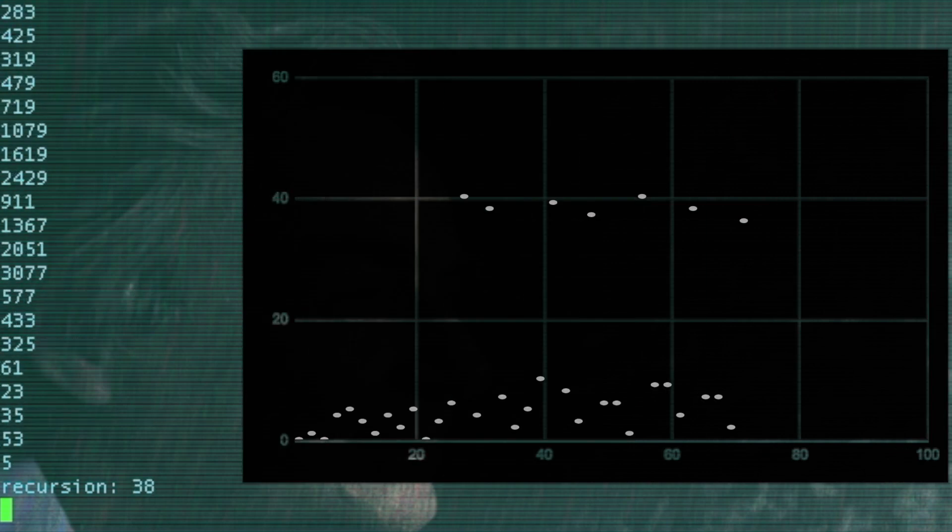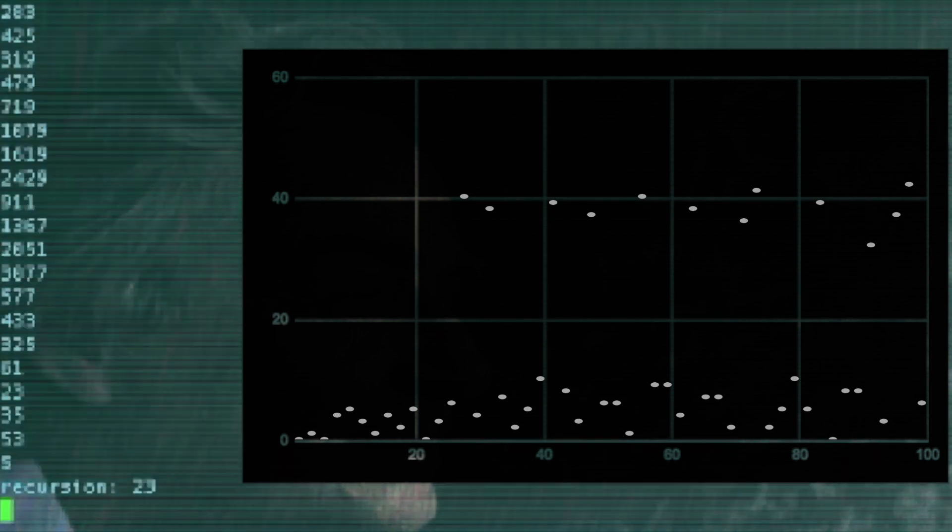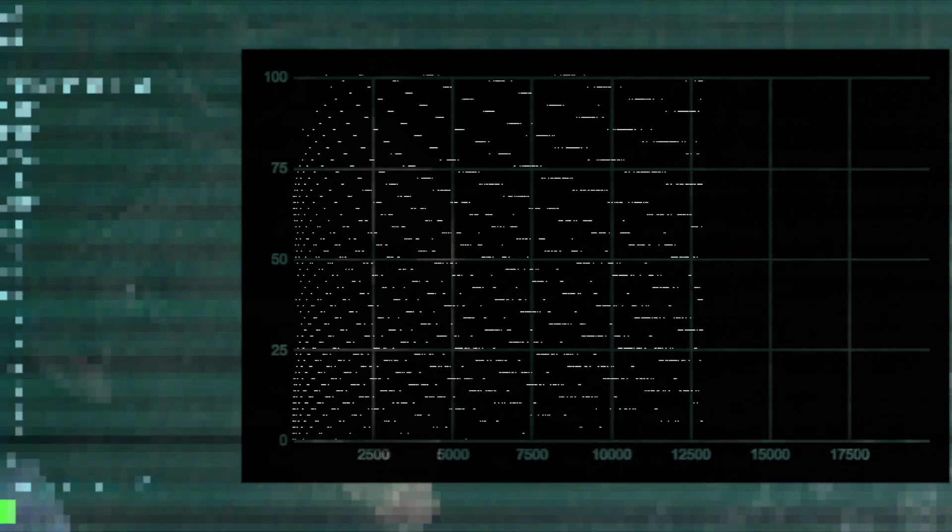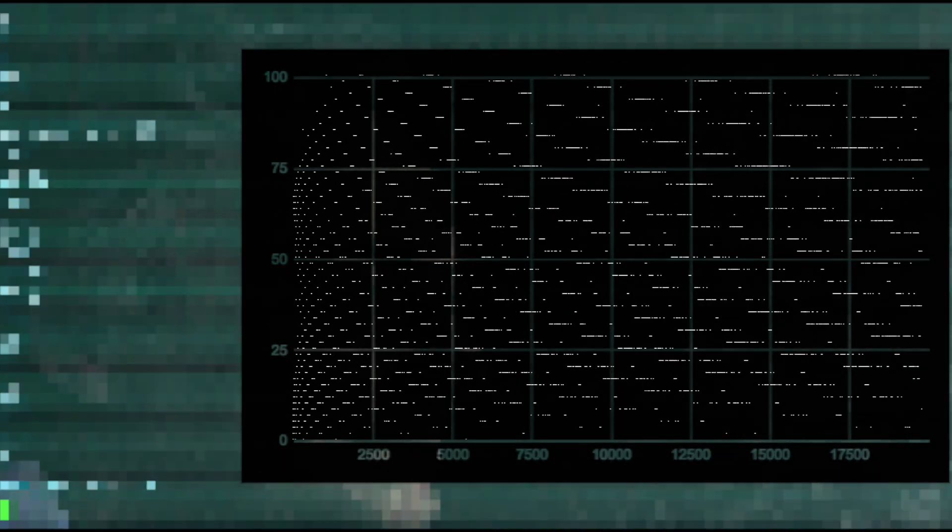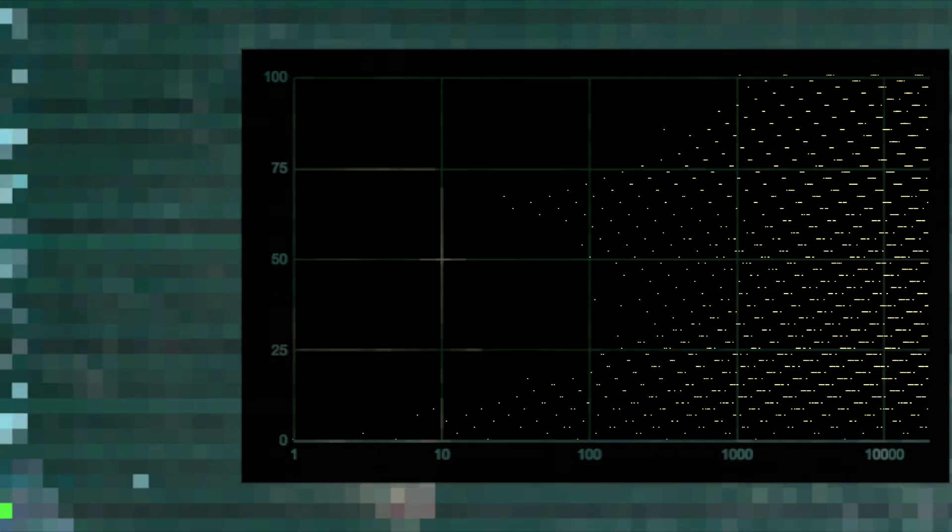So if you look at the recursion up to 100 for just the odd integers, honestly, it doesn't really look like anything's going on. Maybe you see something? I honestly personally do not see anything. But if you do it all the way up to 20,000, then you start to see these weird, crazy bands forming and there's this weird curvature to everything. So then you do a log plot of that same plot up to 20,000 of the odd integers and their recursion numbers. And like, there's a pattern there.